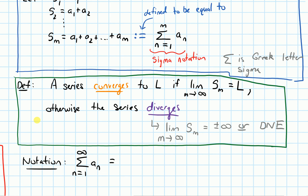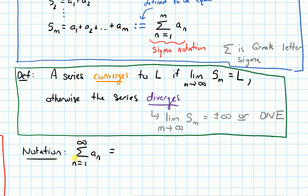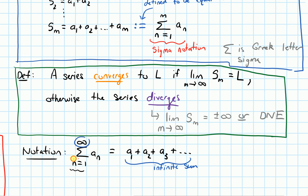Let me reiterate this notation. When I write sigma with n equals 1 at the bottom and infinity at the top, that means I start off by plugging in a sub 1, keep going up integer by integer — a sub 2, then a sub 3 — and start adding these together. The sigma means sum, and the fact that I have infinity at the top means I keep going forever — this is an infinite sum. The number at the bottom, here it's 1, but it doesn't have to start at 1. If I wanted to start at 5 or 120, I could, and I would just write that at the bottom.